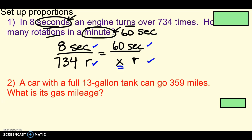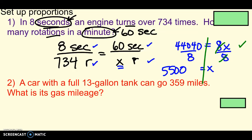So, 734 times 60. I'm just going to write it down and then we'll check it. So, I just did the math to get my cross products here. Divided by eight on both sides to get X by itself. And I got 5,500. And I just need a label. So, right here, because I labeled it, I know I'm looking for rotations. 5,500 rotations. Yep, that's what we got.